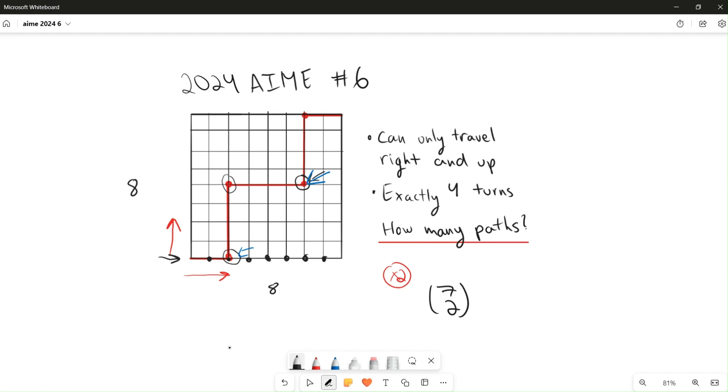Now once you do that, there's exactly seven ways to determine this turn. That's because once you choose these two turns, you can make the path like this, you can make it like this, and so on. So there's exactly seven ways where you can place this turn once the vertical lines along which the first two turns are going to be placed are determined.